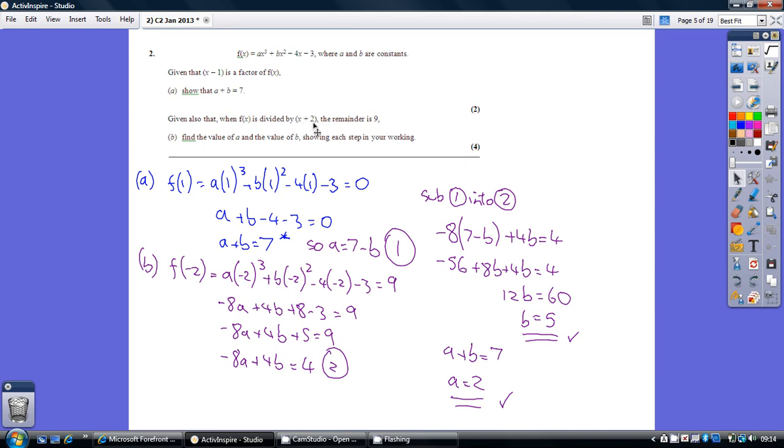So basically this is telling us when we substitute minus two in - remember this change of sign - we get a remainder of nine. Substituting minus two in and working that through gives us a second equation involving a and b.